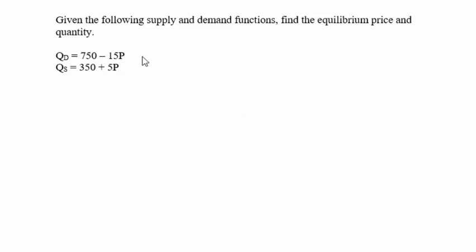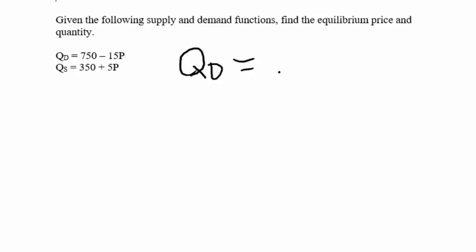Here we have a problem where we're given a quantity demanded function of 750 minus 15p and a quantity supplied function of 350 plus 5p. Since we're at equilibrium, we know that the quantity demanded function intersects with the quantity supplied function.